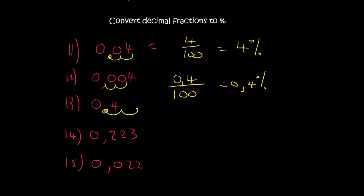Here you move two decimals, 1, 2. This one here needs to be filled in with a 0, so that's 40 over 100, which is 40%. And then here you've got two decimals, 1, 2, so that's 22.3 over 100, and that's 22.3%.